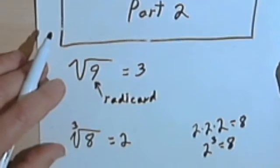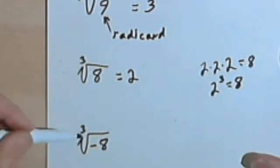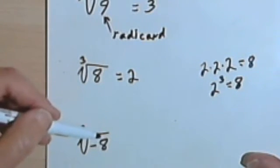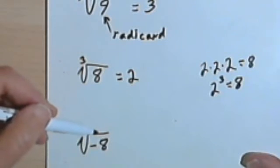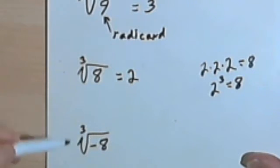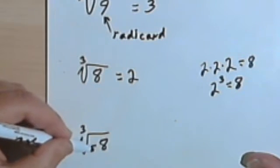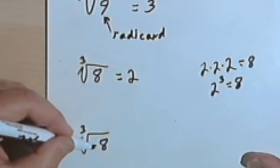Now let's look at another one. Here we have the third root of negative 8. Now you remember in the previous video we said that if you had something like the square root of negative 9, you couldn't do anything with it, there was no solution. But third roots, in fact any root that's an odd number, like a fifth root or a seventh root, you can find the root of a negative number, the third root of a negative number.